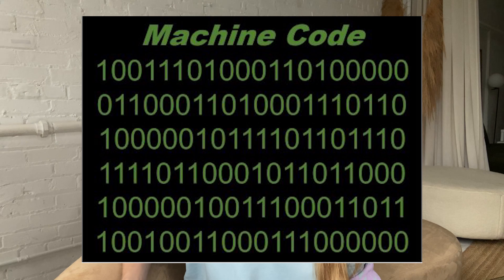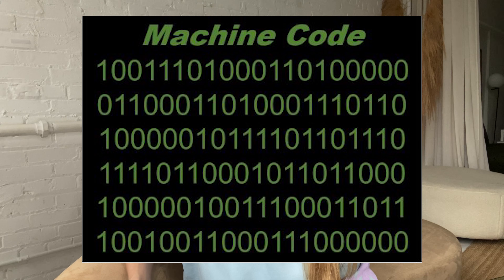Computers have their own language which is called machine code and as you can see here it wouldn't make a lot of sense to humans right away. Each number or letter is telling the computer to change something in its memory, whether it be a video, an image, some text, or some numbers.